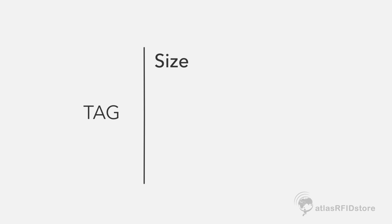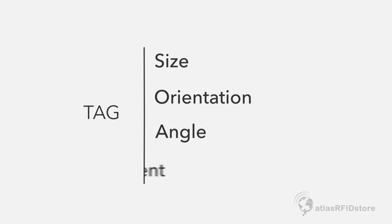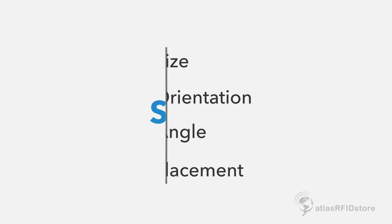Hey guys, today we're going to talk about some of the different factors that can affect the read range that you receive from the products in your application. Specifically, we're going to talk about tag size, orientation, angle, and placement — otherwise known as an acronym that we call SOAP.